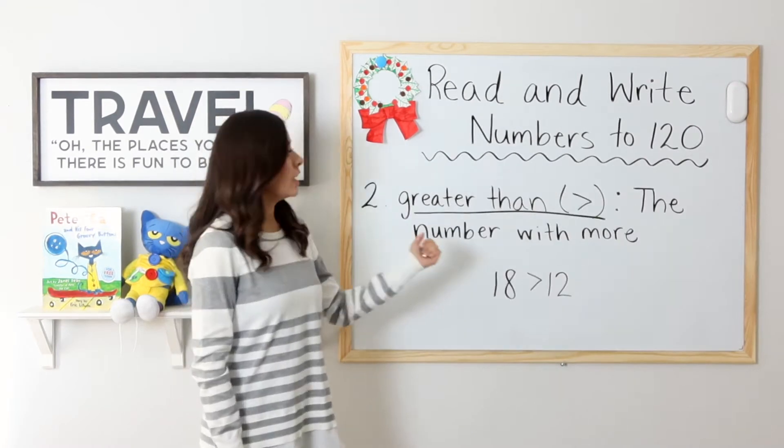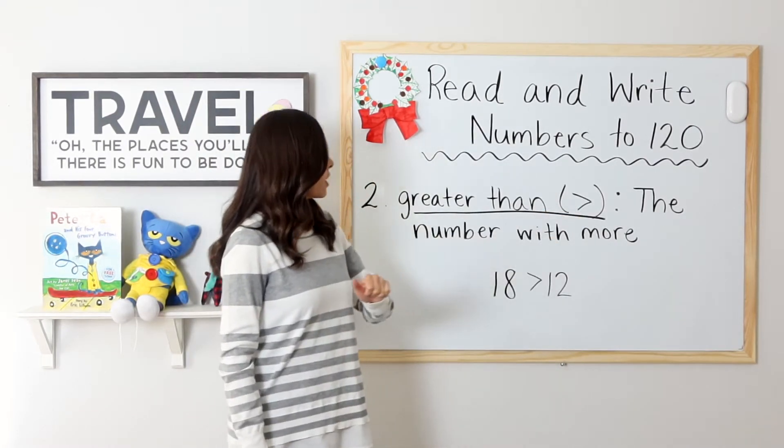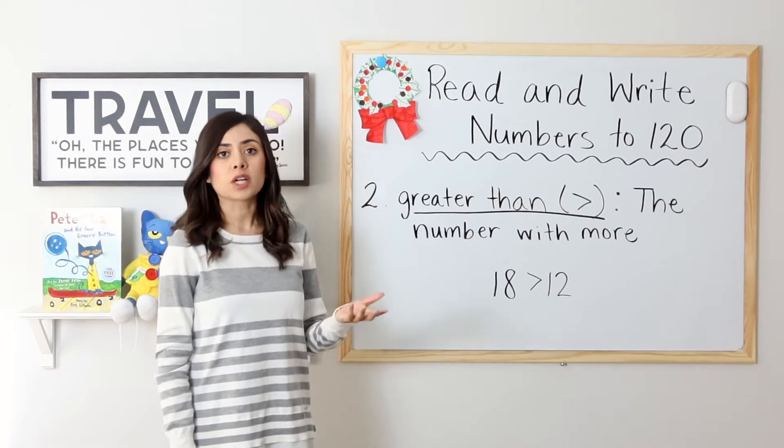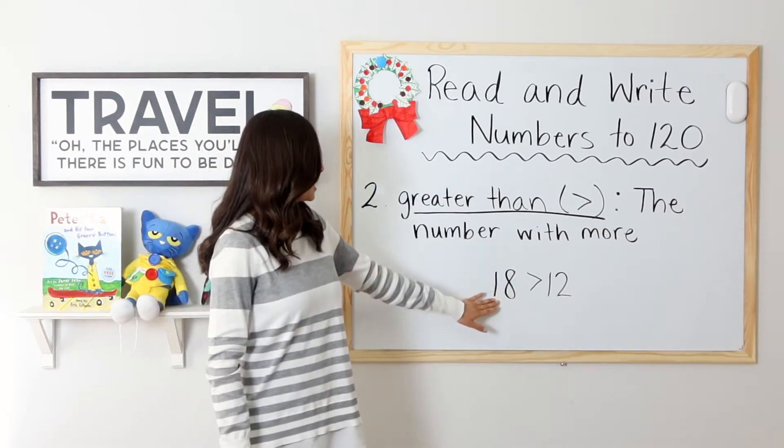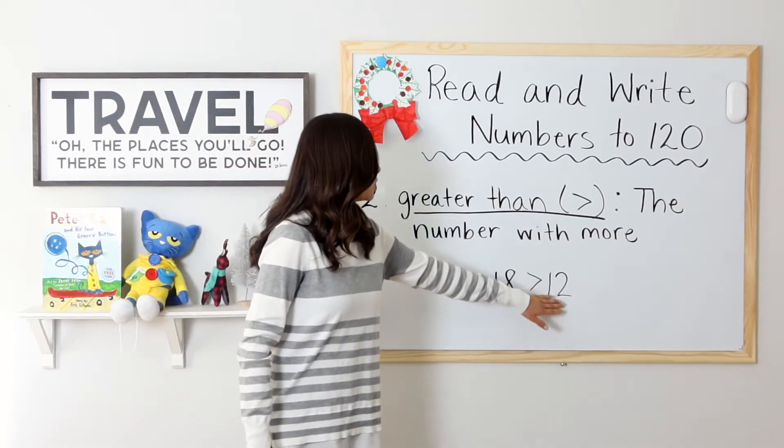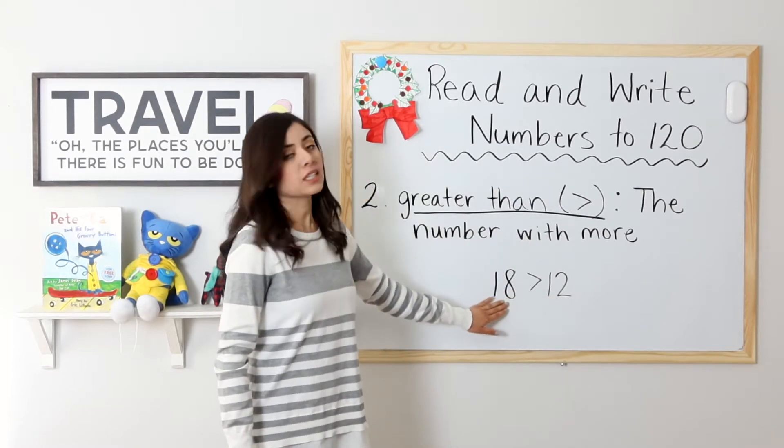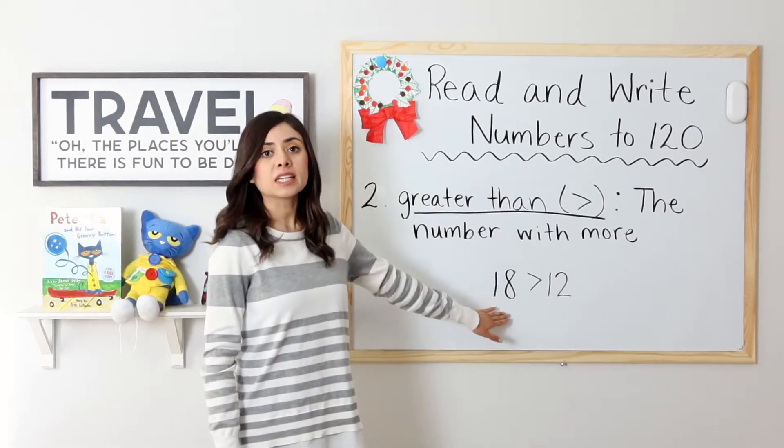Greater than. Here is the symbol for greater than. Greater than refers to the number with more. For example, 18 is greater than 12. 18 is the greater number. It has more.